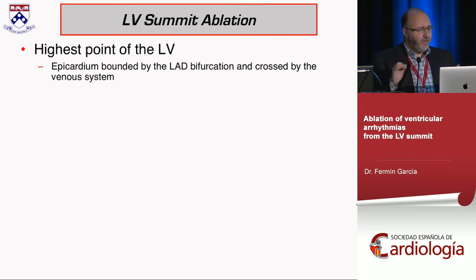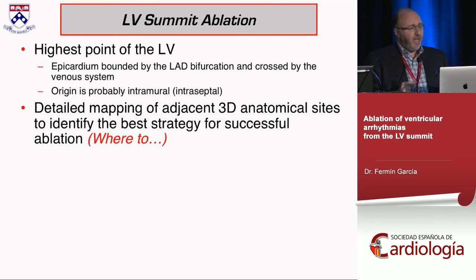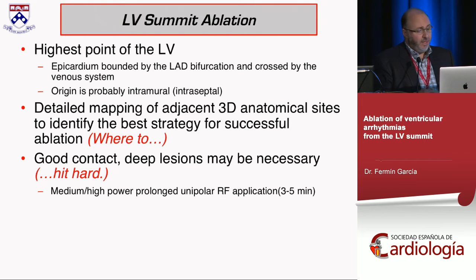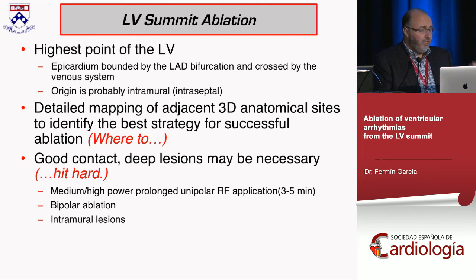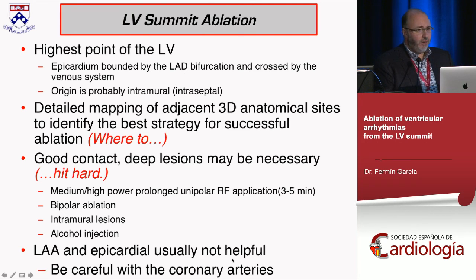In summary: the highest point of the LV is the LV summit, epicardially bounded by the coronary arteries. Many of these arrhythmias are more intramural than epicardial. You need detailed mapping at all five sites before applying high-power lesions — and these lesions must have good contact. Consider bipolar ablation, intramural approaches with needles, or alcohol injection. The left atrial appendage approach doesn't work even though it's on top of the epicardial LV summit. Above all, be aware of and careful with the coronary arteries.